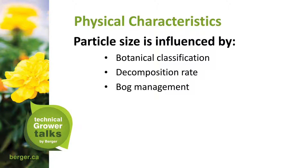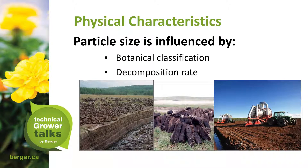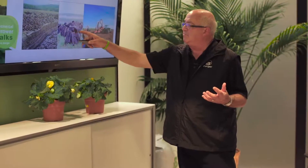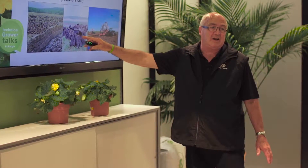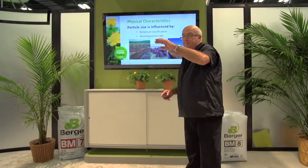Particle size is influenced by decomposition rate, bog management, and harvesting method — vacuum versus block cut. In Europe, block cut is common; once it dries it produces very long fibers, sometimes so long that companies need a plunger on the potting line because it rises out of six-inch pots. However, many countries have lost up to one-third of their bog lands — Ireland has lost 70% — because going too deep goes past the point of no return for re-establishing young sphagnum peat.